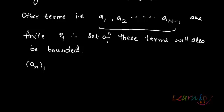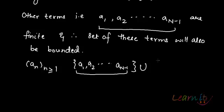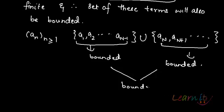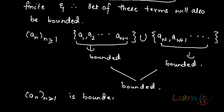So this sequence a_n can be broken up into the set of terms {a_1, a_2, ..., a_(N-1)} union with the terms {a_N, a_(N+1), ...}. These are the two sets. Now each is a bounded set, so the union of these two bounded sets will also be bounded. Therefore, the sequence a_n, when it is convergent, is bounded. So all convergent sequences are bounded.